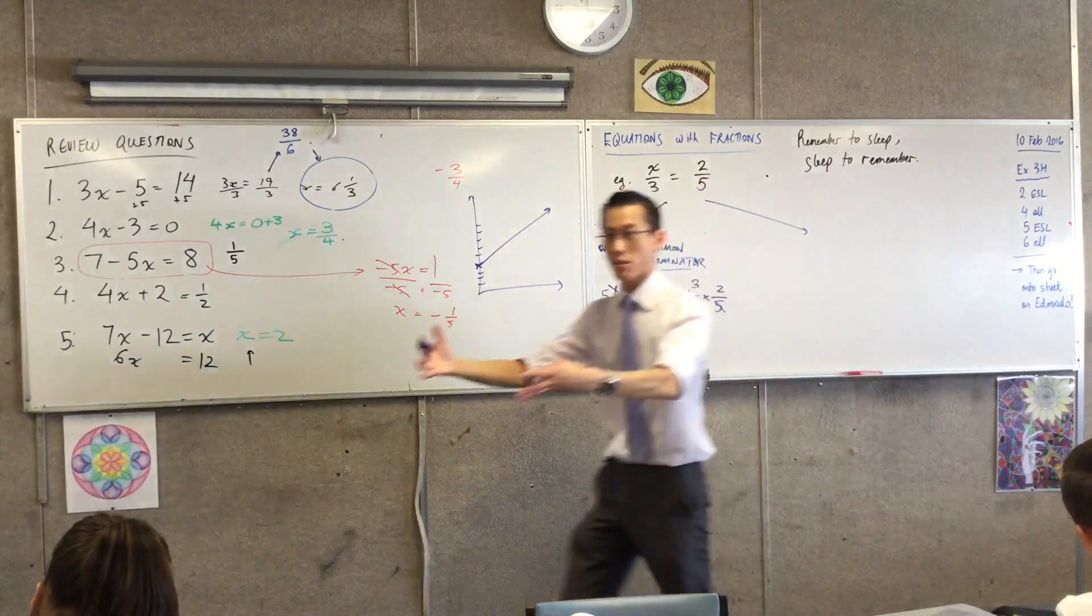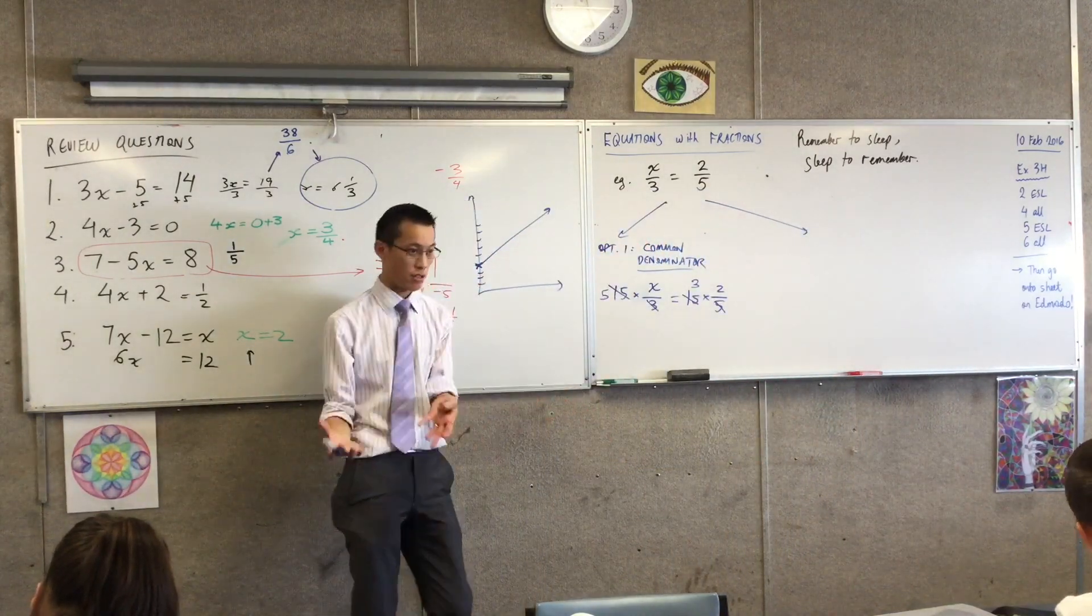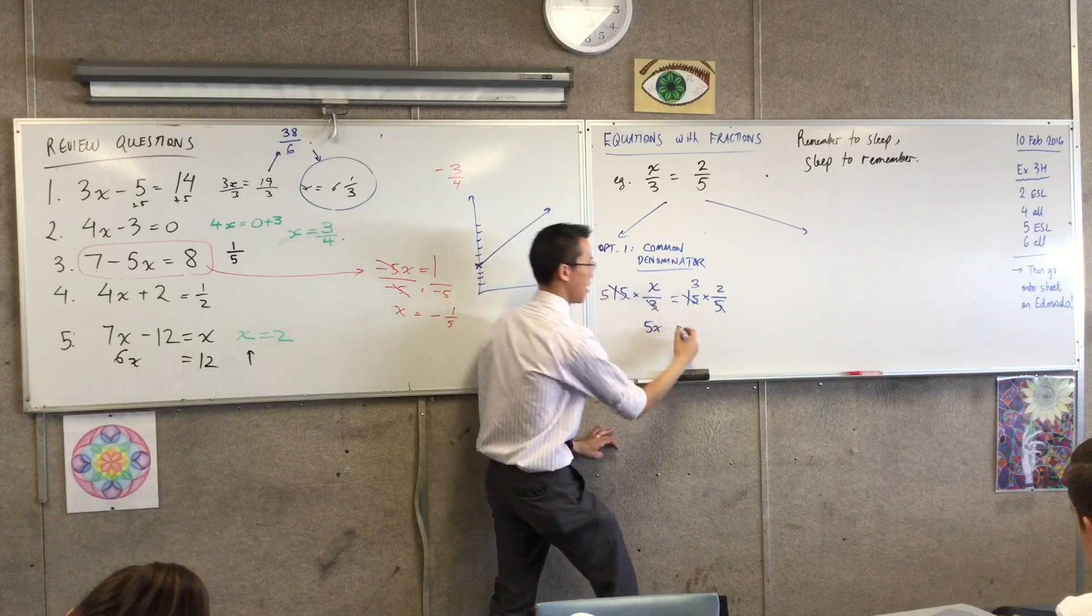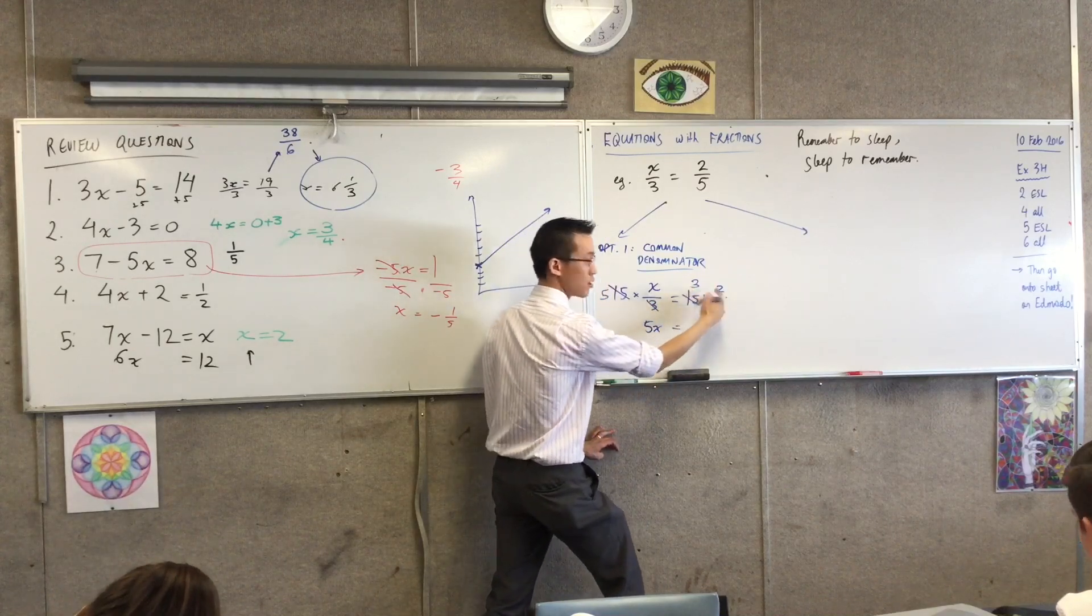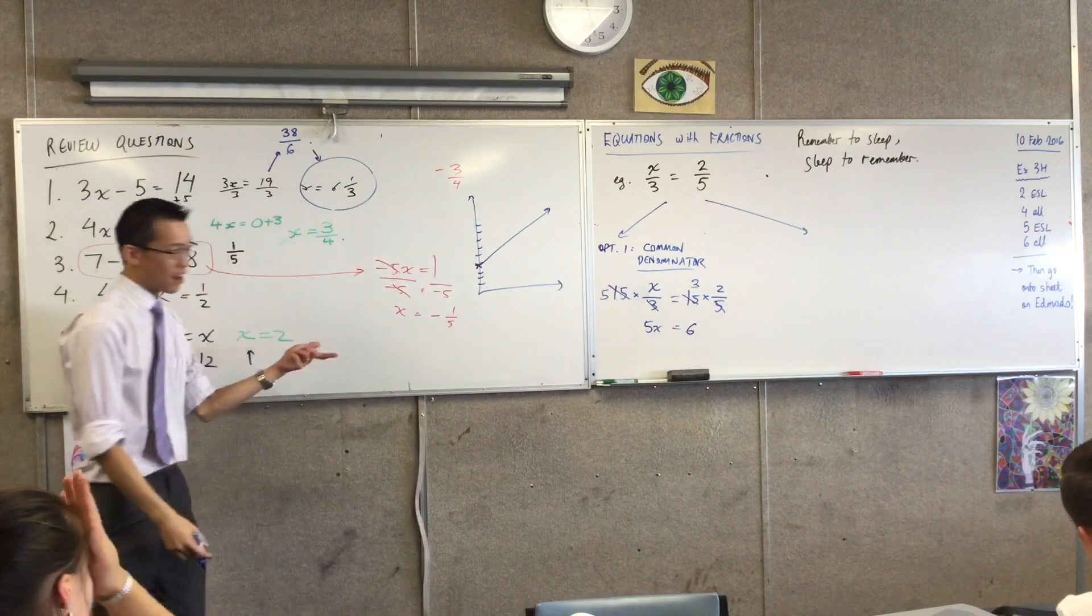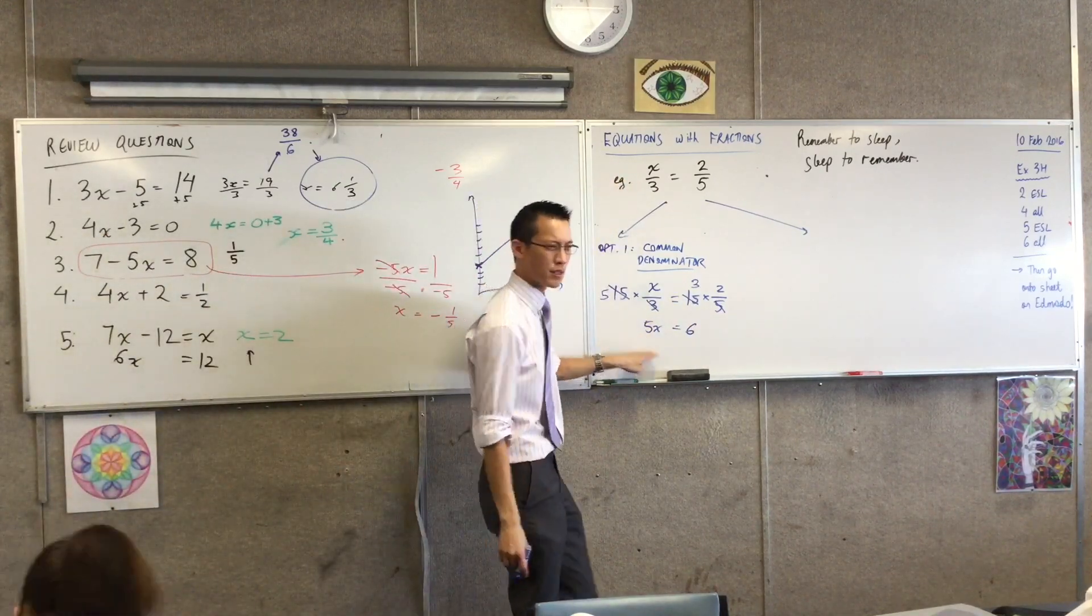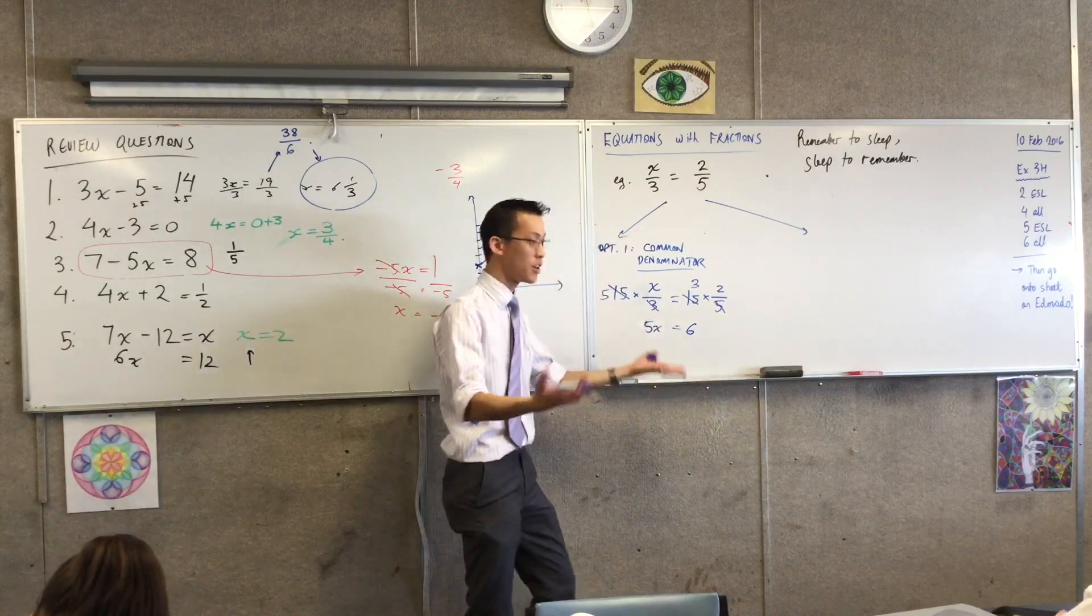So now I multiply through, and because I chose my numbers well, I've got 5 and x, and then I've got 3 and 2 which is 6. So now we've taken this awkward thing with fractions everywhere and this is pretty simple, isn't it? What do I do to both sides? Divide by 5. Done.